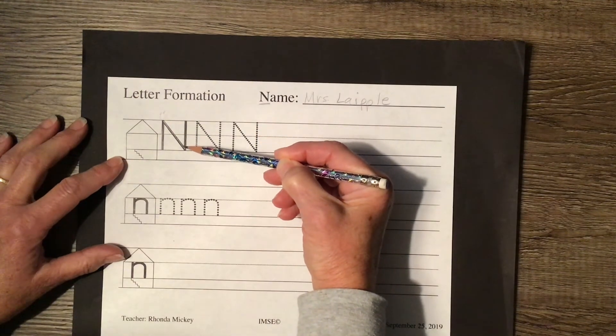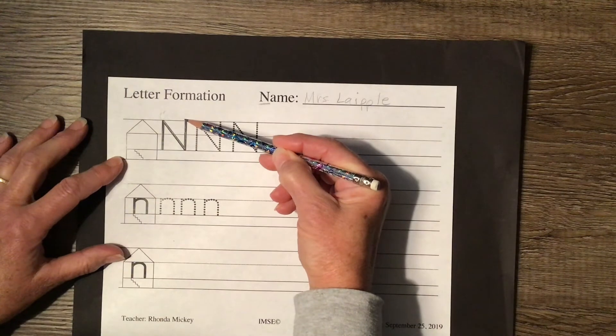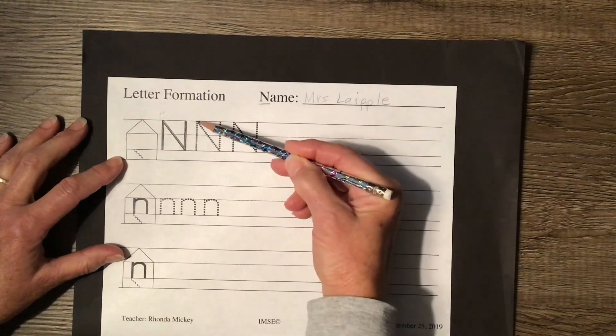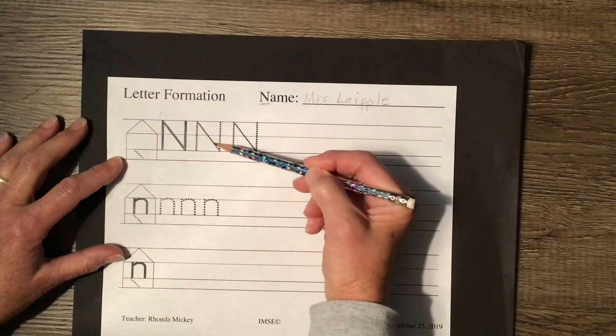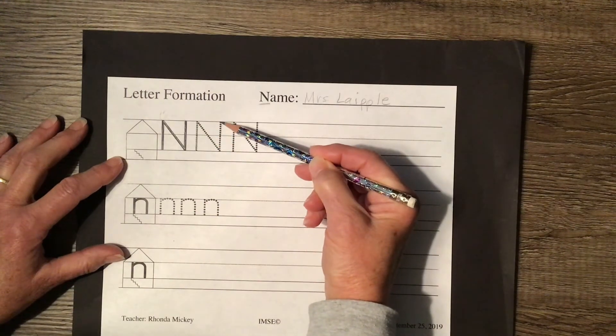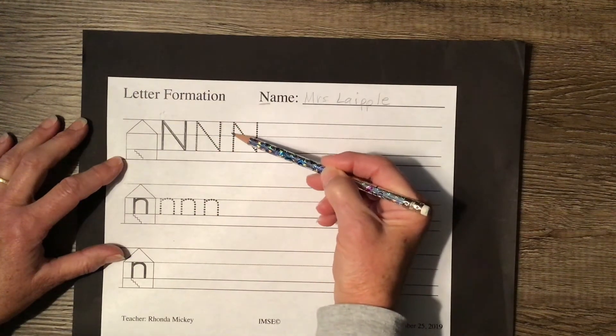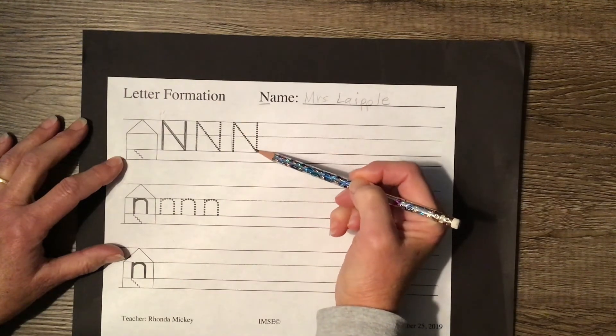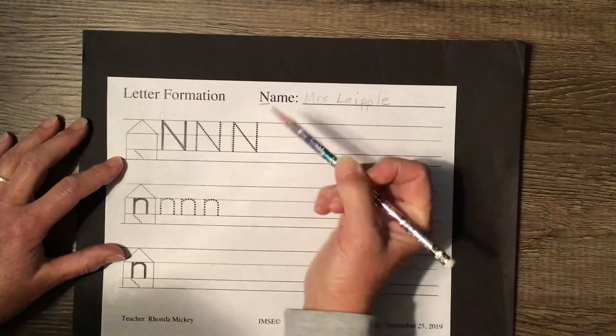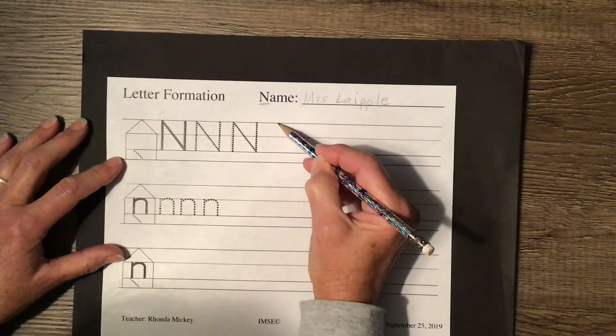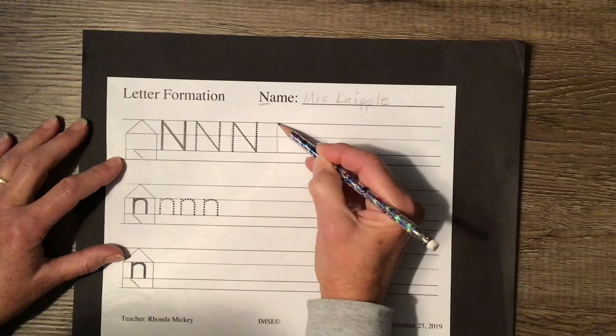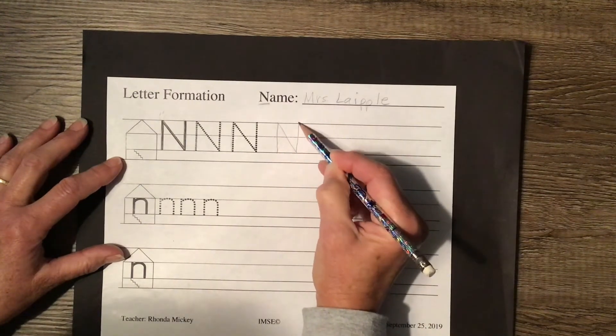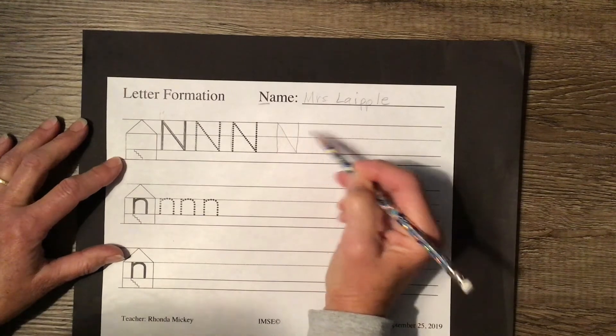So it's a big line down, frog jump, slide down, straight up. Big line down, frog jump, slide down, straight up. So here I'll make one by myself. Big line down, frog jump, slide down, straight up. That is the hard part.